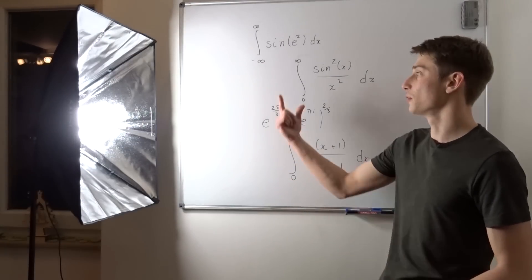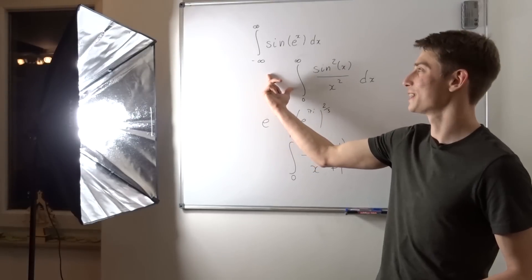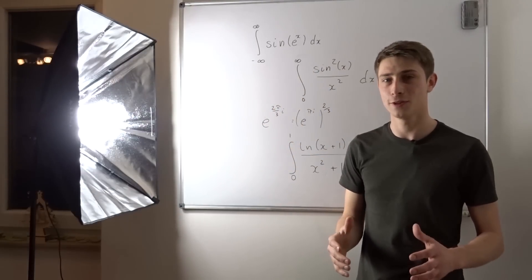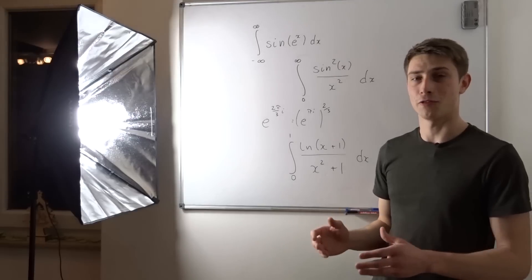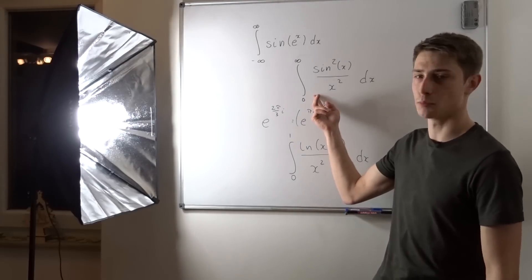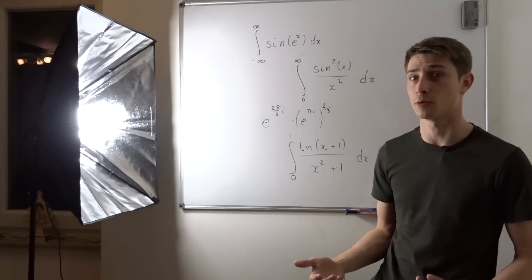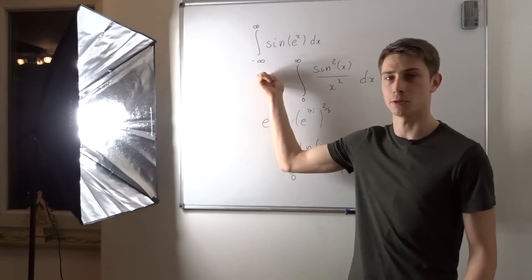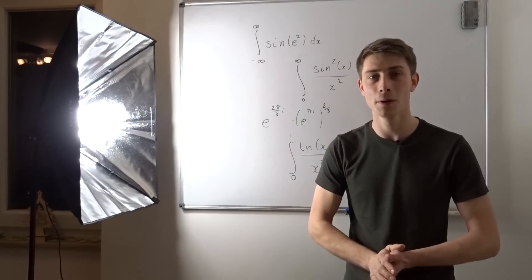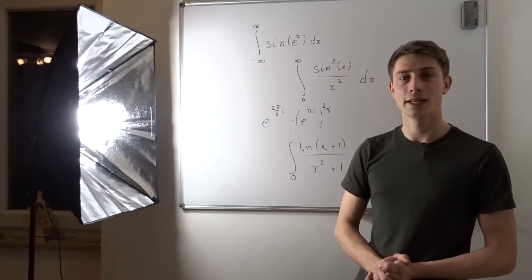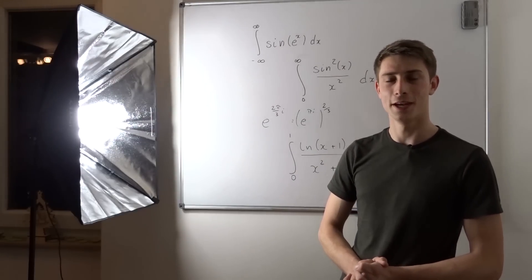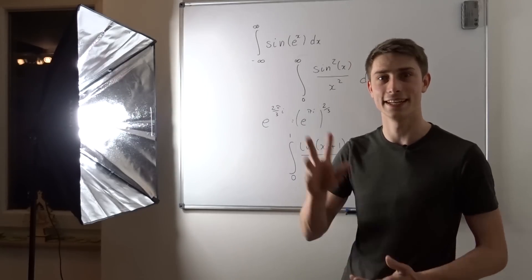And after that, we are going to take a look at those two bad boys right here: the improper integral from zero to infinity of sine of e to the x times dx, and also the improper integral from zero to infinity of the sine squared of x over x squared times dx. Those are going to be absolutely ridiculous, and I hope you will enjoy those videos. Up until the next video, have a flammable day. See ya.